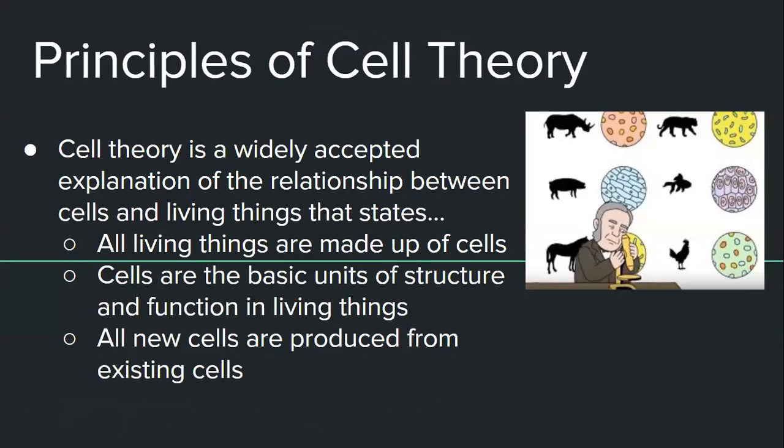Cell theory has been a widely accepted explanation for the relationship between cells and living things. According to this theory, there's three main things that you have to understand. All living things are made up of cells, extremely simple. Just got to know everything that's living has some sort of cells, whether it's one or trillions. It depends on the organism, but just know that it's made up of cells.